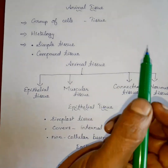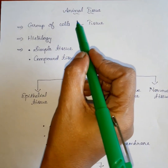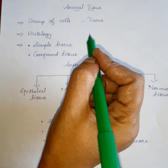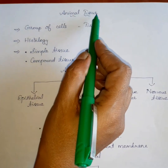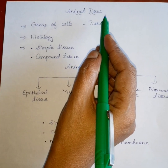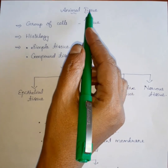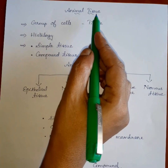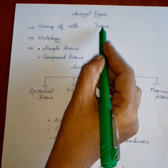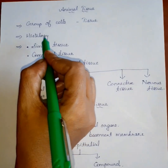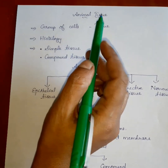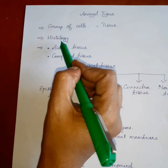Next, we are going to learn about animal tissue — it is very important. What is tissue? A group of cells arranged together to form a structure is called tissue. What is histology? The study of tissue is known as histology.